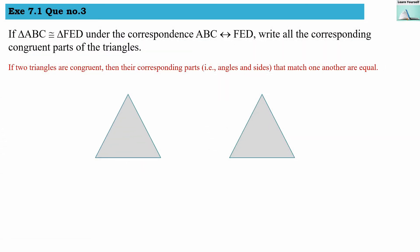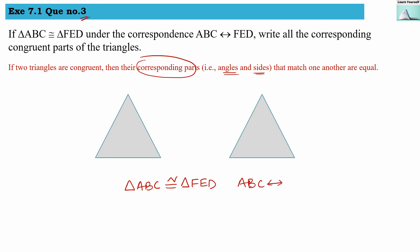Exercise 7.1, question number 3: if triangle ABC is congruent with triangle FED under the correspondence ABC–FED, write all corresponding congruent parts. If two triangles are congruent, their corresponding parts — sides and angles — that match with another triangle are equal. So writing triangle ABC congruent with triangle FED means angle A equals angle F, angle B equals angle E, and angle C equals angle D.